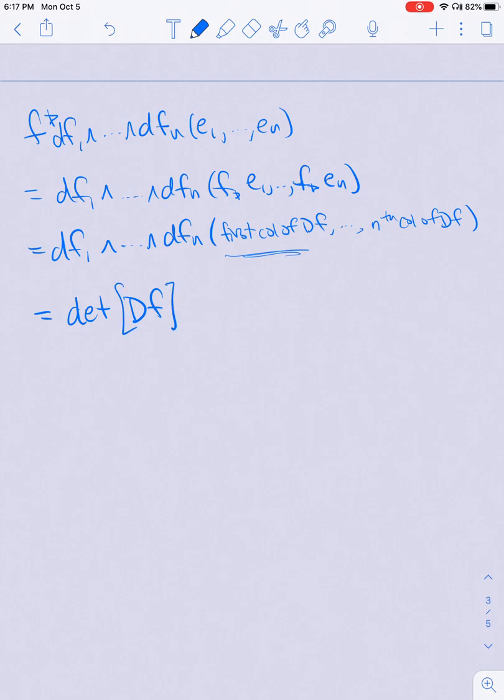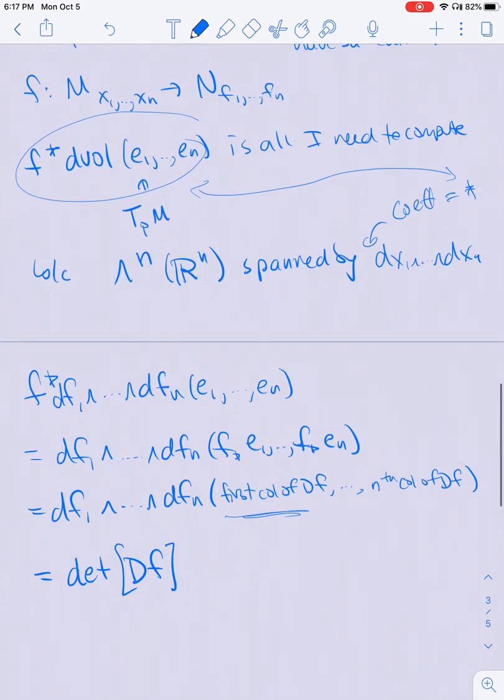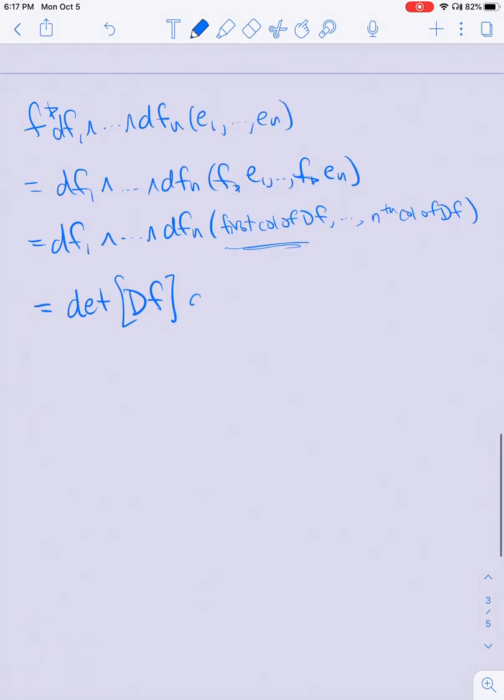That's a really nice way to compute what the... so this implies that the pullback of df₁ all the way out to dfₙ is equal to the determinant of df times dx₁ all the way out to dxₙ.